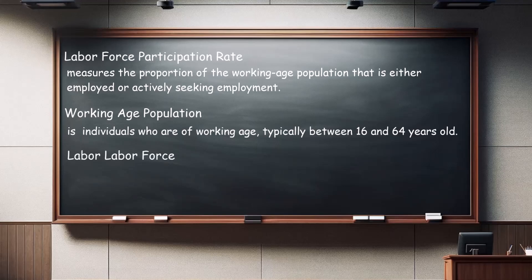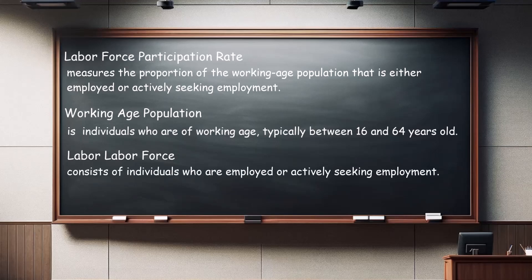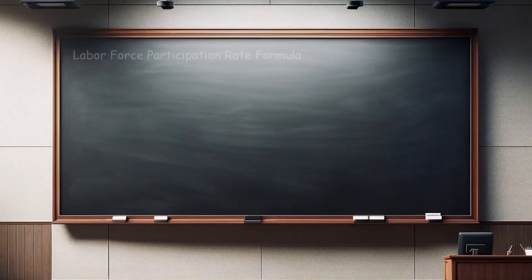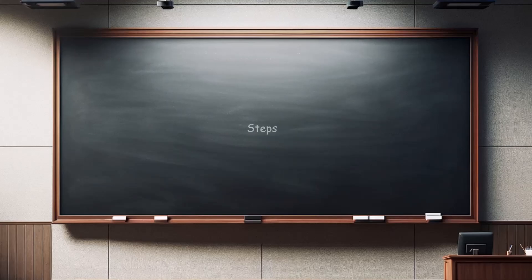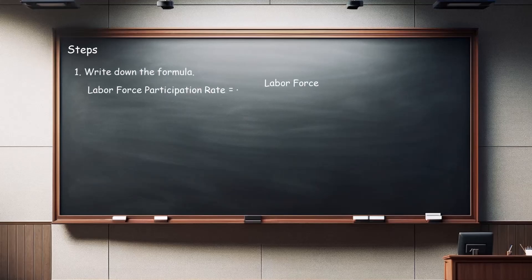Next, we need to know the labor force. The labor force consists of individuals who are employed or actively seeking employment. This can be obtained from official labor market surveys or employment data provided by government agencies. The formula for calculating the labor force participation rate is: Labor Force Participation Rate = (Labor Force / Working Age Population) × 100%. Step one is to write down this formula.